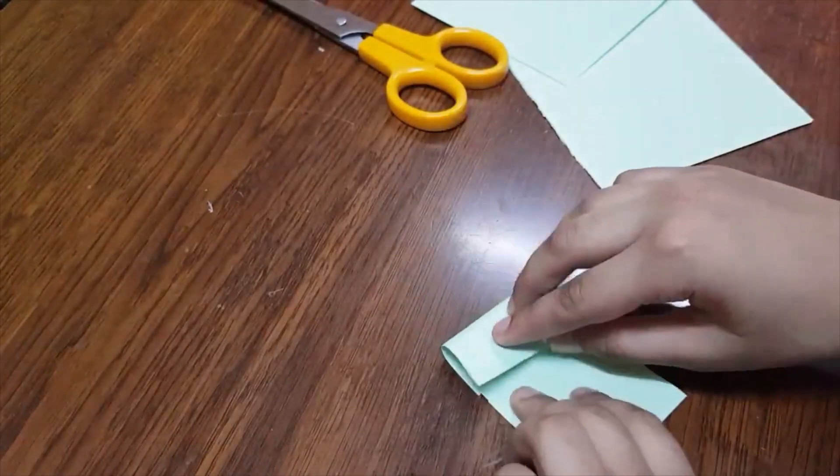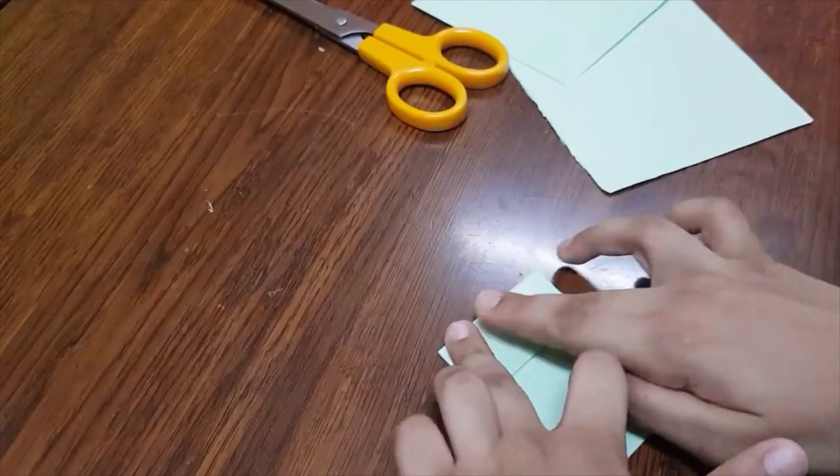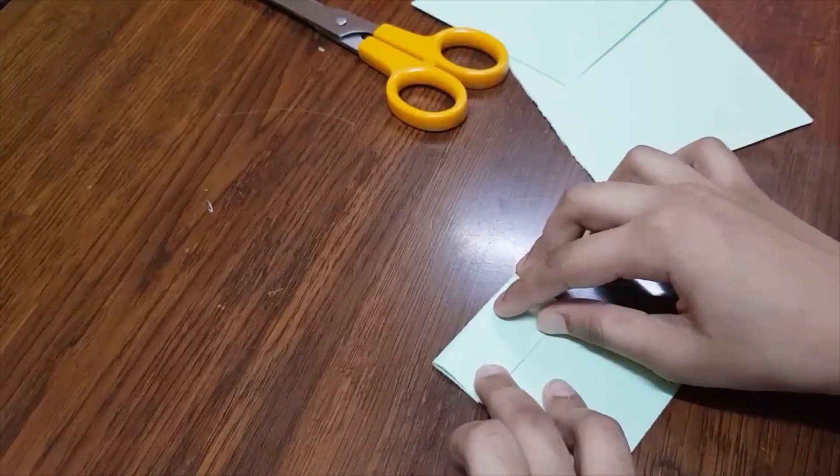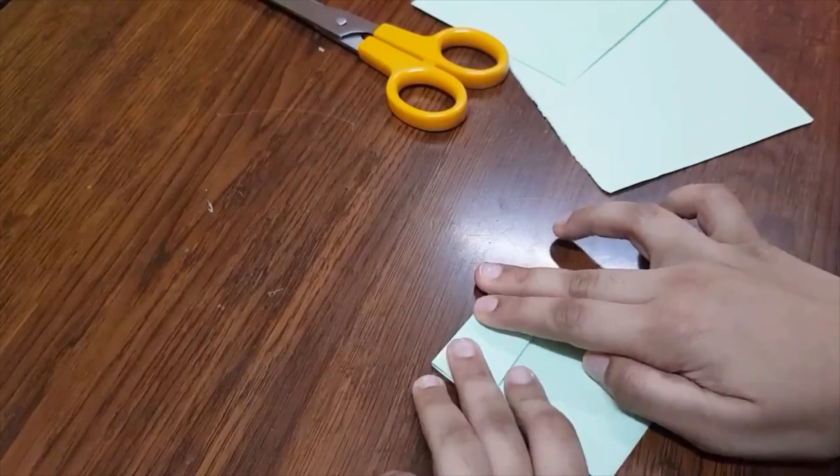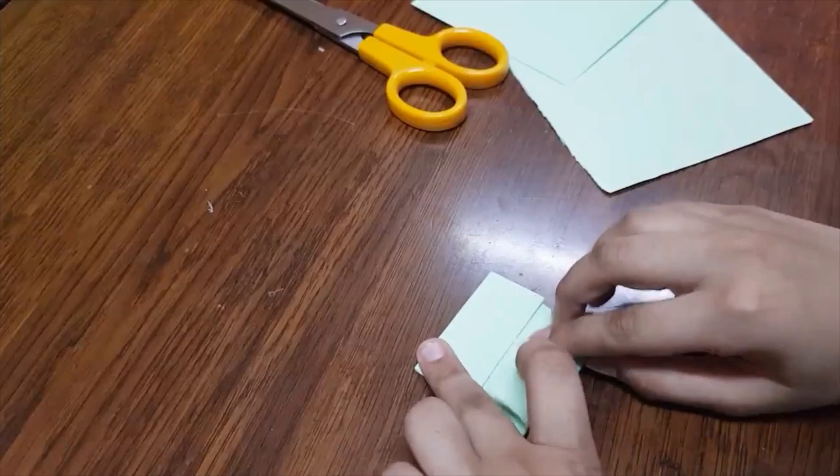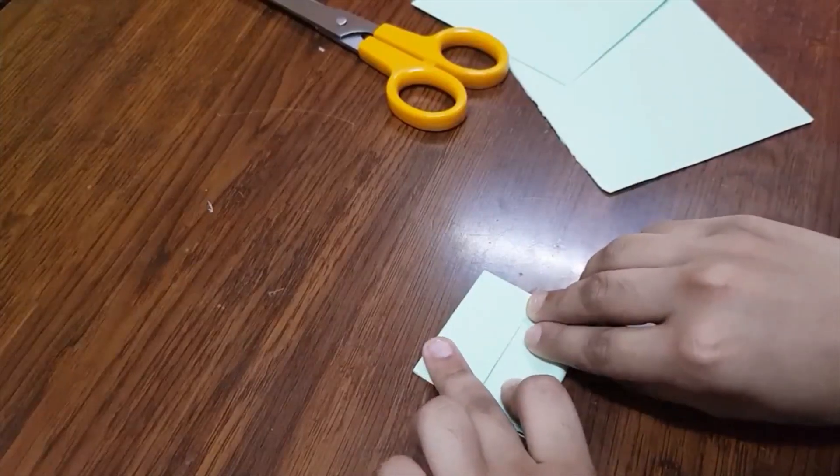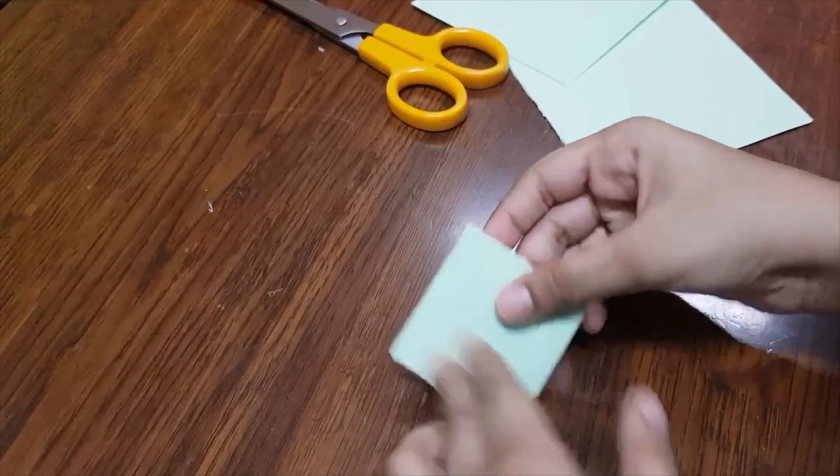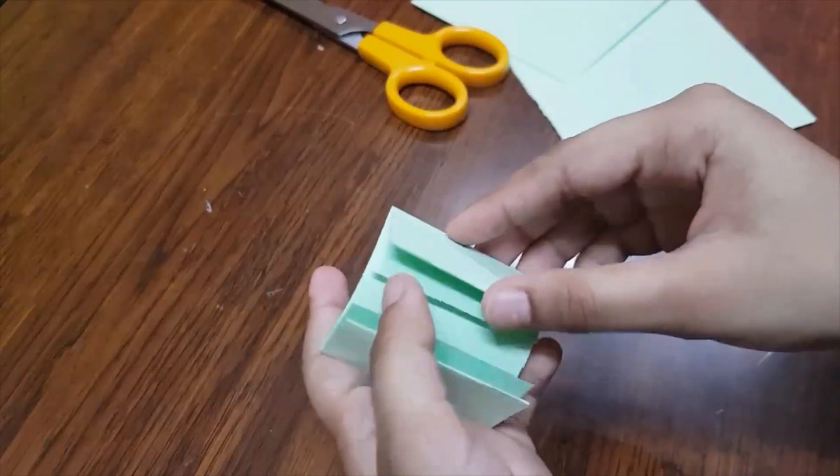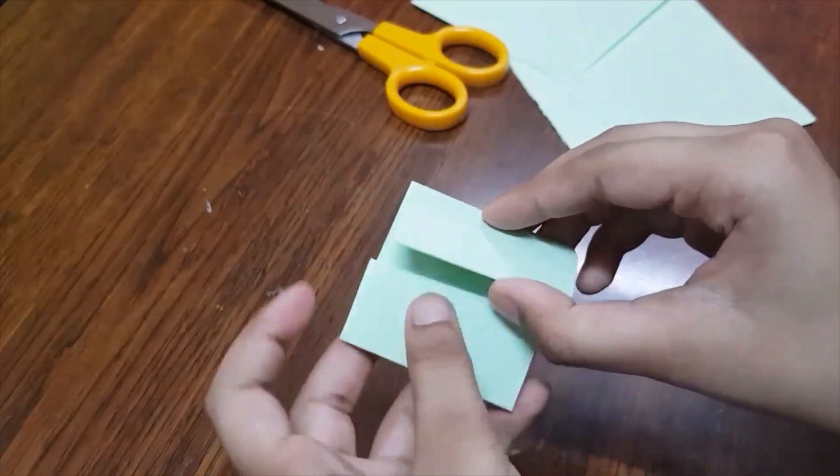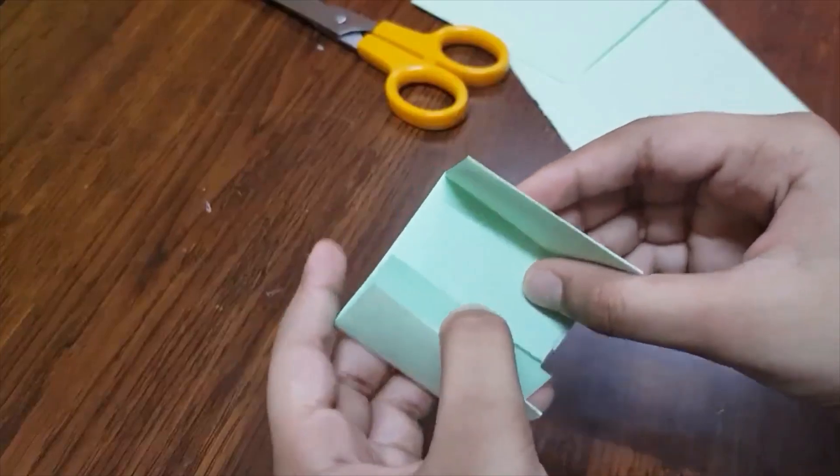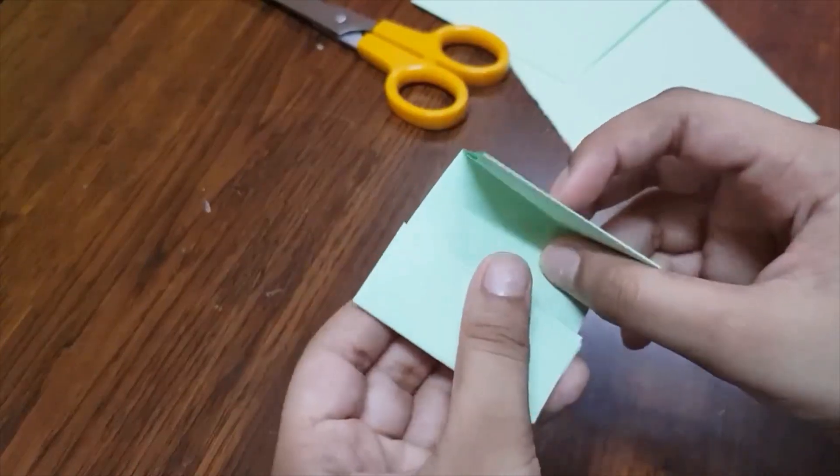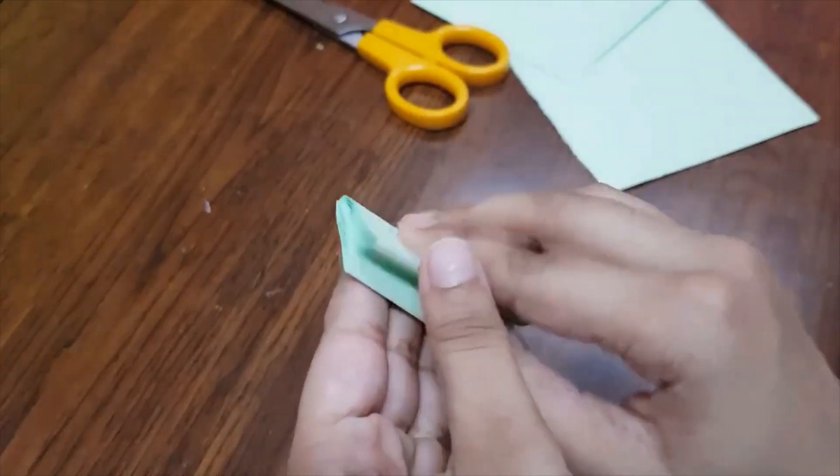You've got like this. Now fold this part into here, like that, and then fold this part there. So that you can get this small kind of shape.